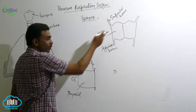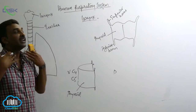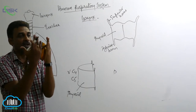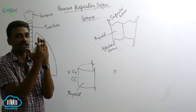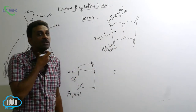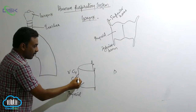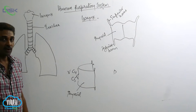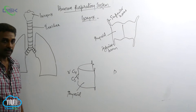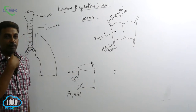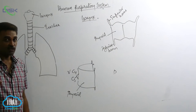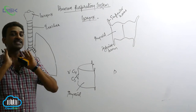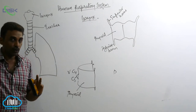The thyroid is the largest cartilage and is made up of two halves of hyaline cartilage that come together and meet. At the anterior mid-ventral side, it is swollen — this is called the laryngeal prominence, also called Adam's apple. It is more prominent in males than in females. The thyroid is complete laterally and ventrally, but incomplete on the dorsal side.